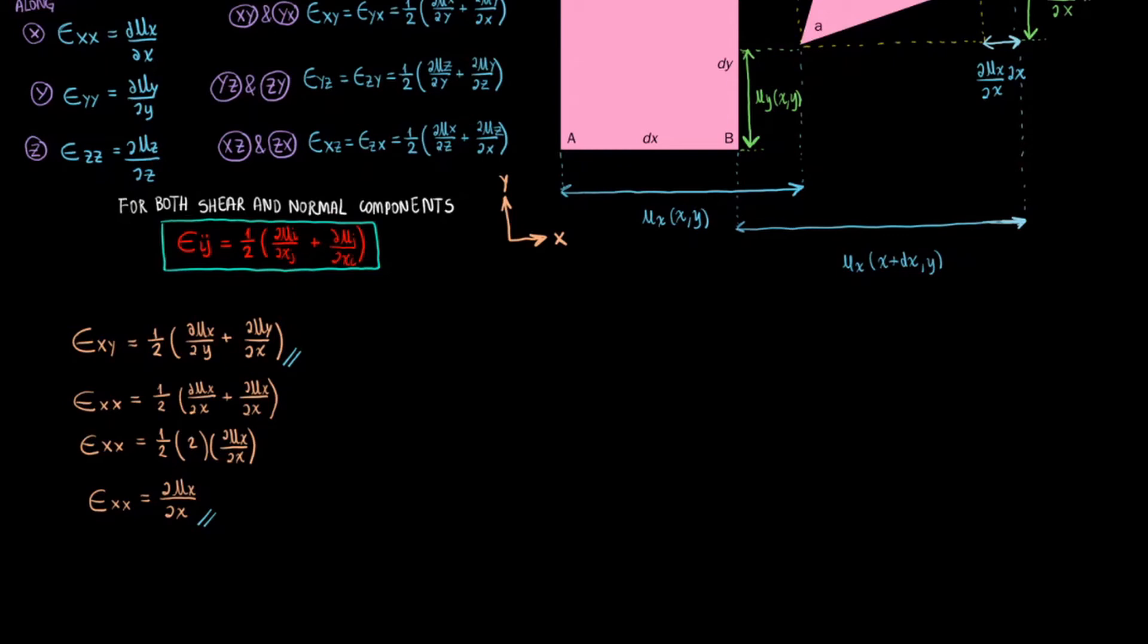All the Cauchy strain components, both normal and shear, belong to the Cauchy strain tensor, sometimes called the infinitesimal strain tensor. When you analyze the Cauchy strain tensor, you will quickly notice that there is symmetry going on.